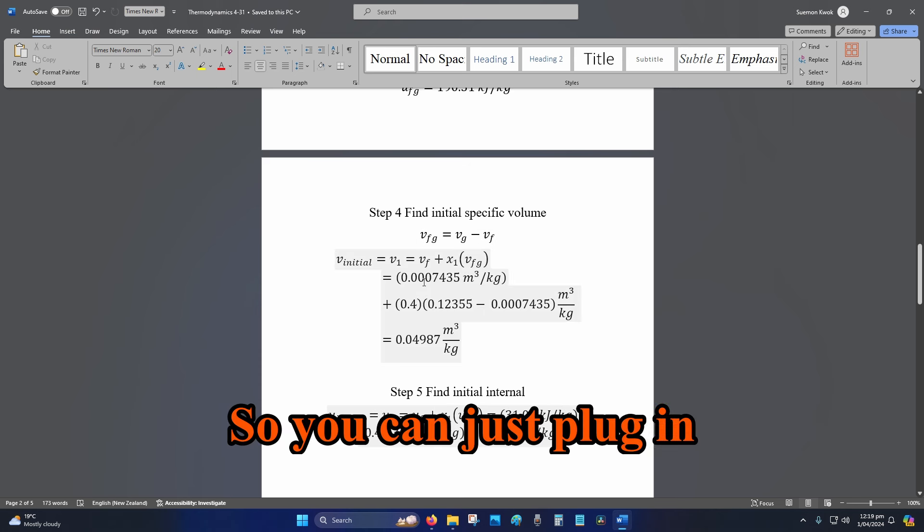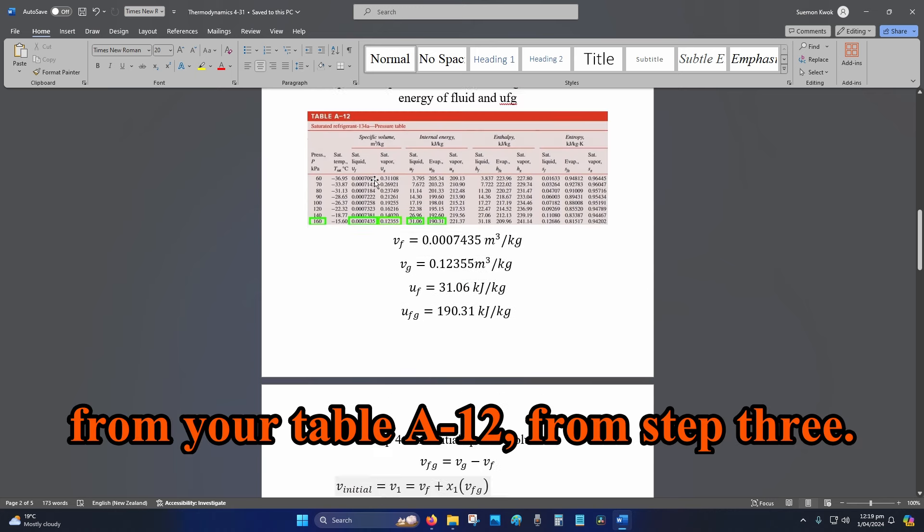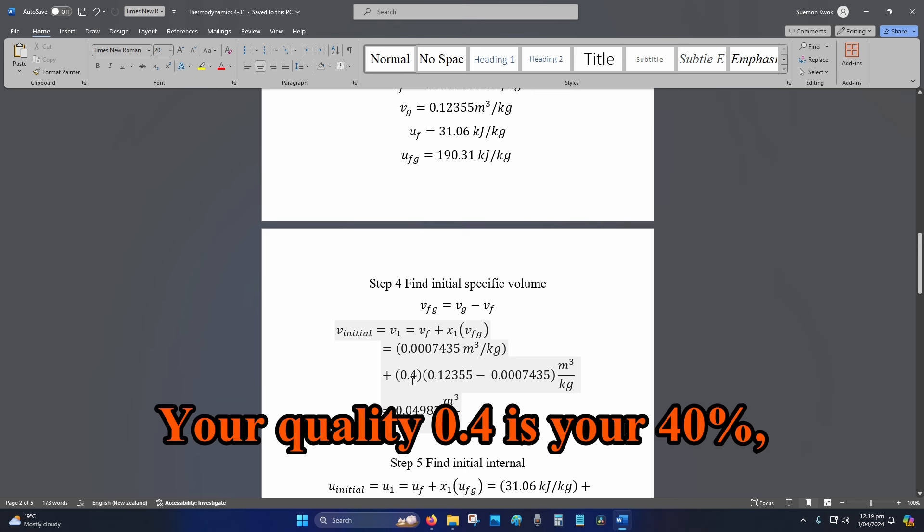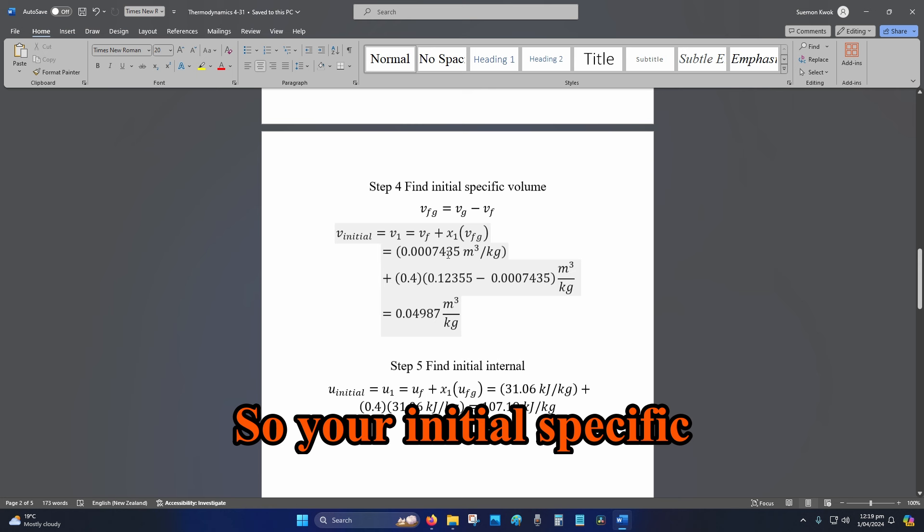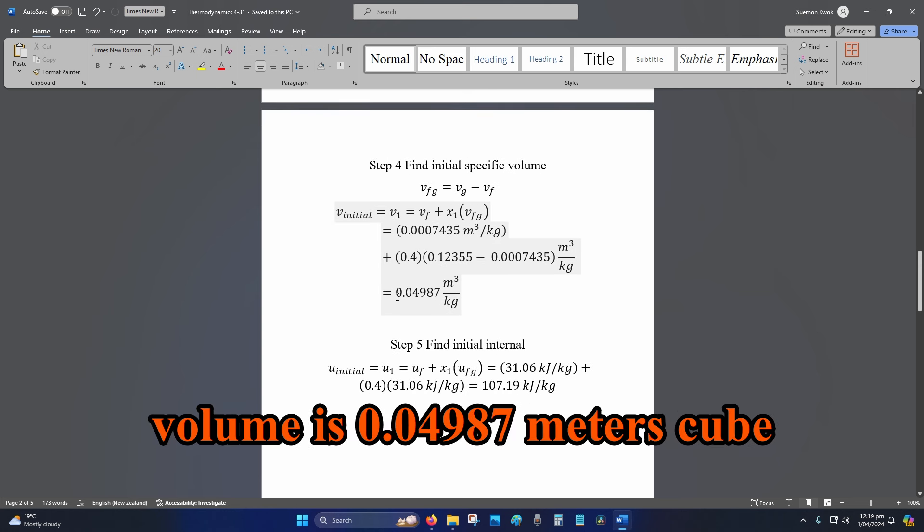You can plug in these values from your table A-12 from Step 3. Your quality 0.4 is your 40%, which is given in the question. So your initial specific volume is 0.04987 m³/kg.